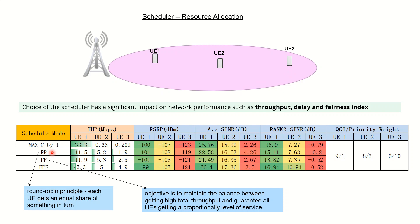A better version of the scheduler mode is Round Robin. It allocates the available PRBs at the cell level equally among all users. UE 2 and UE 3 get more resources in this case, but the throughput is still not very good. The reason is that the MCS would not be good for UE 2 or UE 3.